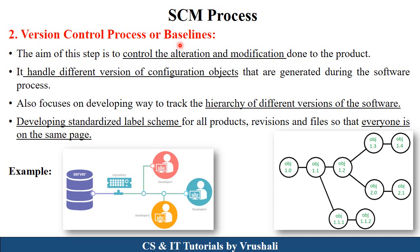The second step is the version control process, also called baseline. This process handles different versions of configuration objects and the particular product. For example, developer 1 works on WhatsApp v1.1 — the first version of the file. Developer 2 adds some extra features and names the file WhatsApp v1.2, the second version. Developer 3 edits that file and adds more features, naming it WhatsApp v1.3, the third version. This last updated file is stored in the repository, and multiple stakeholders use this latest version. The configuration manager controls, alters, modifies, and stores all the latest version files into the repository.